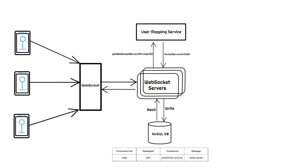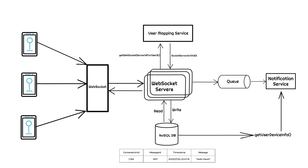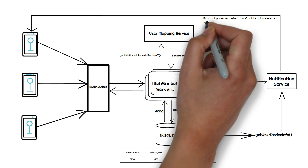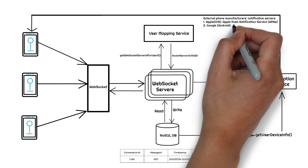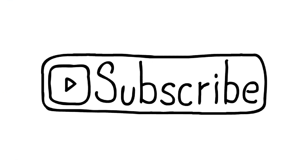This is fine if User A sends a message to User B and User B is online — but what if User B is offline? For that, the message will be pushed into a queue. From that queue, a notification service will use external phone manufacturers' notification servers to push notifications directly to their phones. Examples include Apple Push Notification Service (APNS) for iOS and Firebase Cloud Messaging (FCM) for Android.